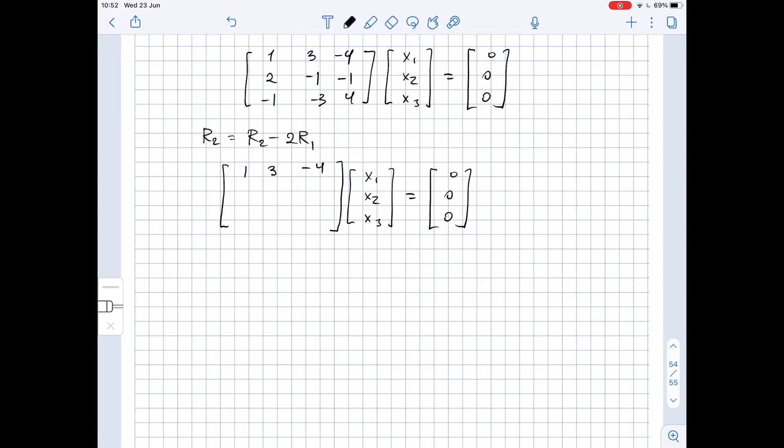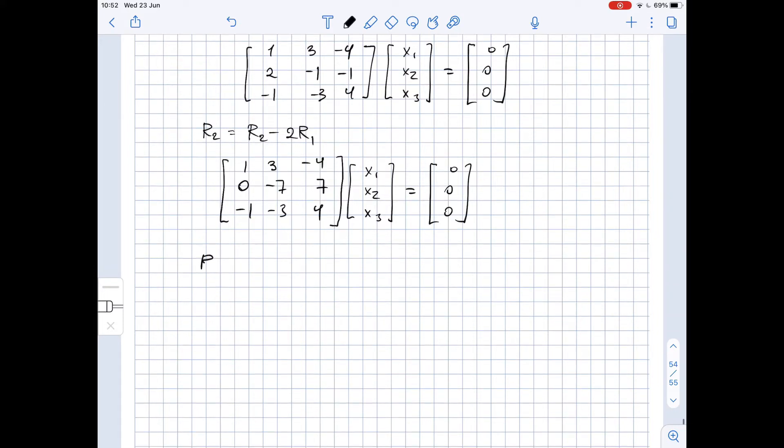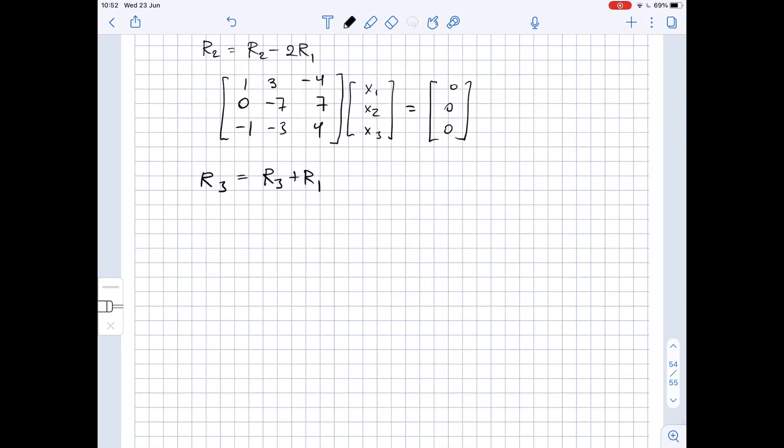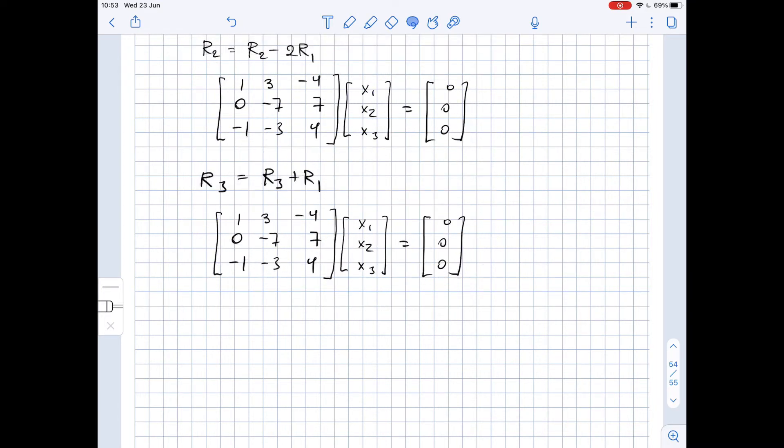But instead of row two we have zero, negative seven, seven, and row three also stays the same. Our next operation is substituting row three with the sum of row three and row one. So we will get again, I'll just copy paste it, but here instead of row three we will have zero, zero, zero.